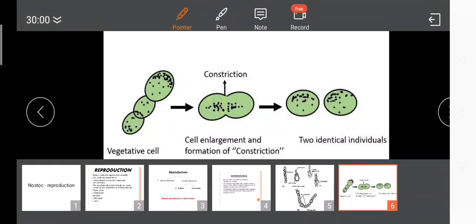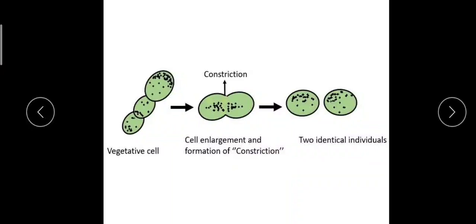It breaks down into two identical individual cells by forming a constriction in the parent cell. That is what fission means. These are the different methods of reproduction in Nostoc.